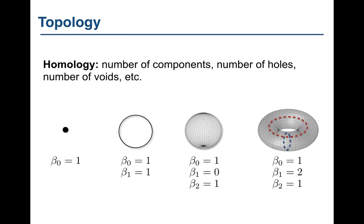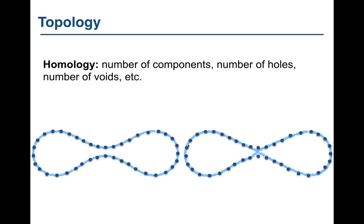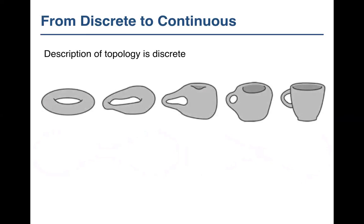Going back to our example, we have one component in each case, but one has one hole and the other has two holes. The number of topological features is inherently discrete — it's an integer. In some sense topology is always discrete, as the old topologist joke goes: a topologist cannot differentiate a donut from a coffee cup, because they can be continuously deformed into each other. Topology is designed to be blind to continuous deformations, so it's characterized only by the count of topological features.